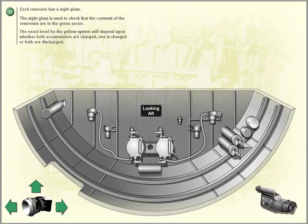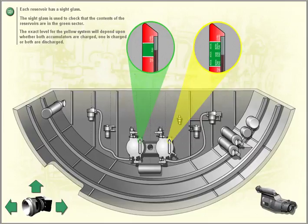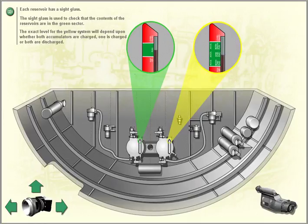Each reservoir has a sight glass, used to check that the contents of the reservoirs are in the green sector. The exact level for the yellow system will depend upon whether both accumulators are charged, one is charged, or both are discharged.